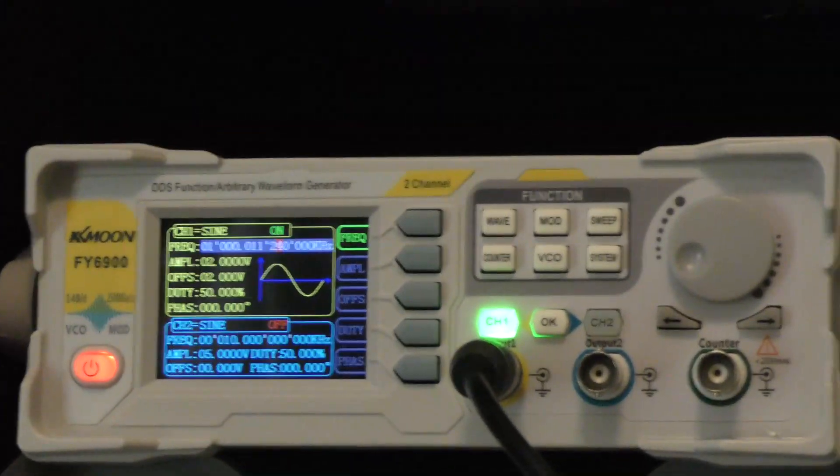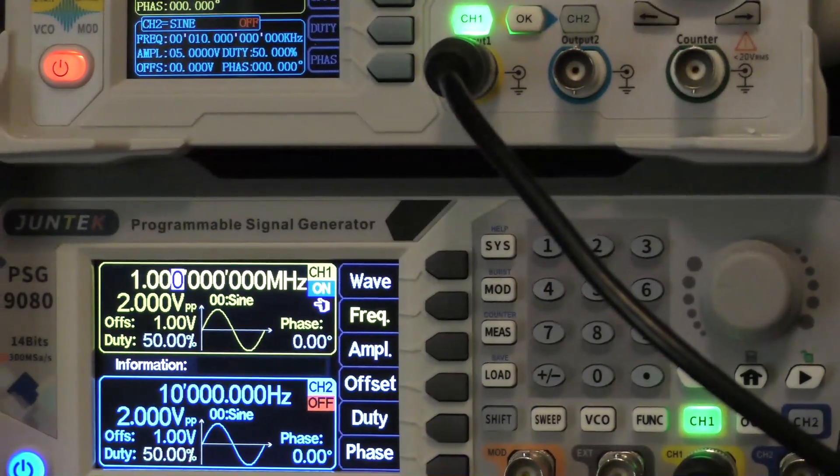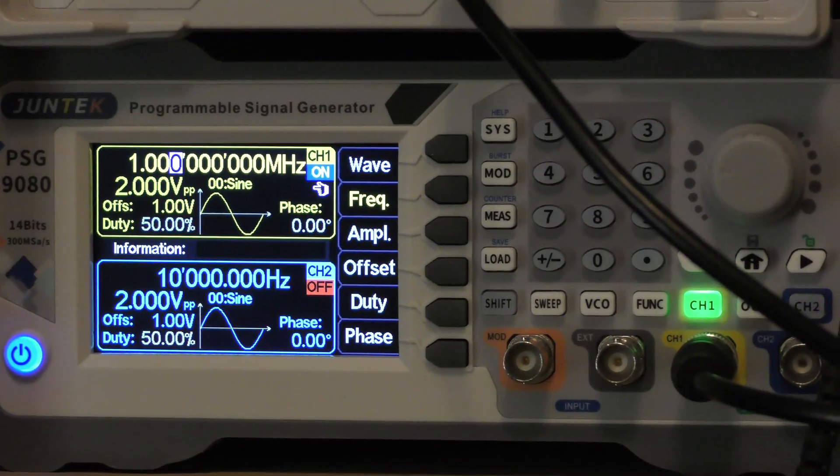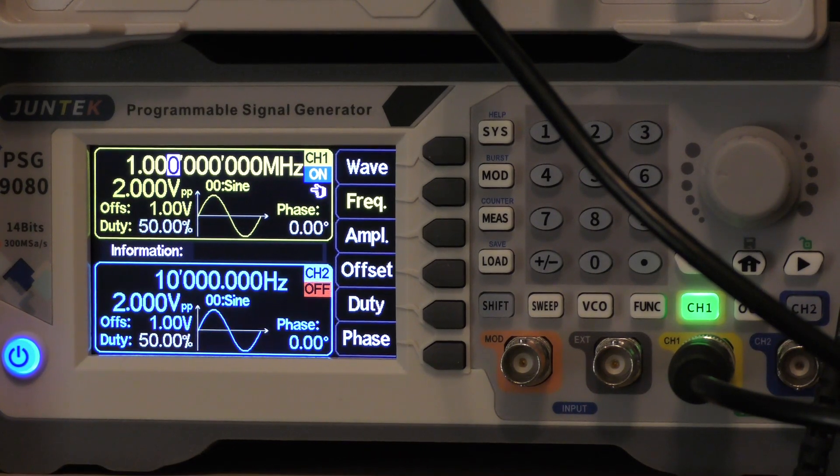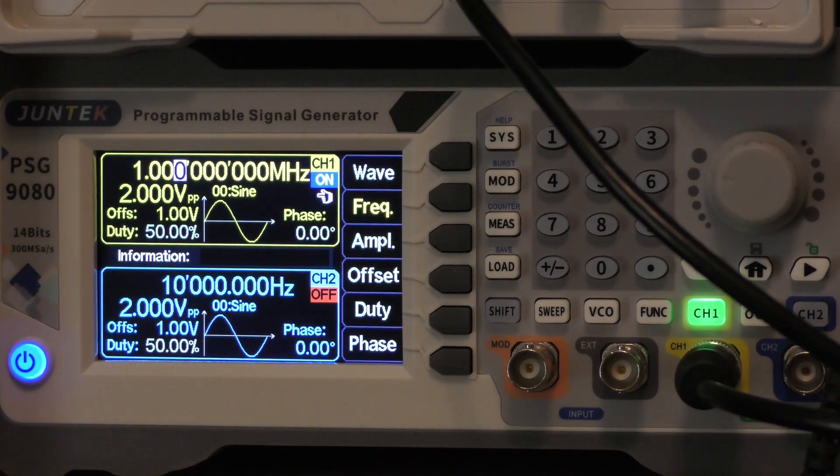So I'm very happy with the frequency stability of both of these generators: the FY6900 and the Juntech. I want to continue to do things like this, looking at the relative difference between the two, and they'll be a part of the overall comparison that I put together of arbitrary waveform generators.